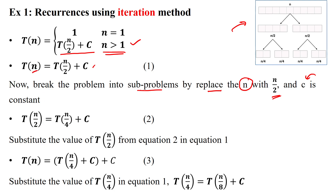When substituting n/2 in place of n, we get T(n/2). Now we substitute T(n/2) by applying equation 1 with n replaced by n/2: T(n/2) = T(n/2 divided by 2) + c, which gives T(n/4) + c. So we have broken that problem into T(n/2), and substituting this value back into equation 1.